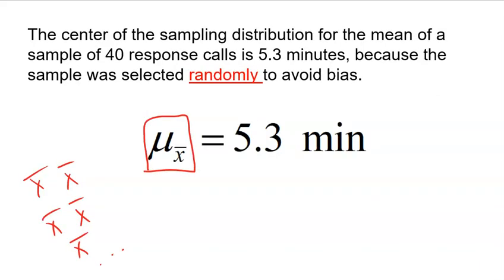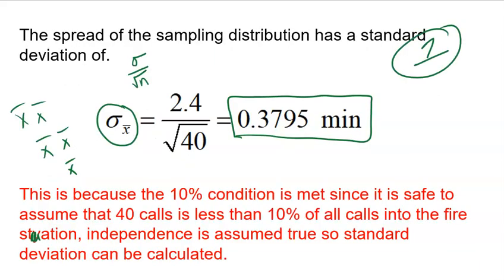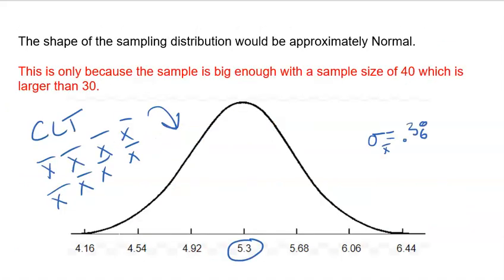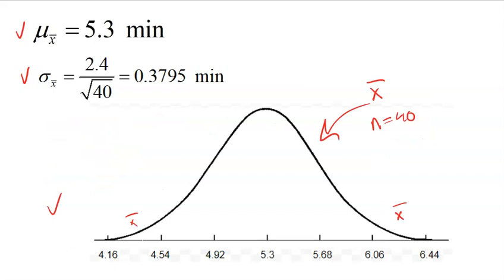Then you could find the middle of the sampling distribution. The spread is just following a formula. The shape is just checking that condition. And again, it all comes together. And once it's all laid out in front of you, you could find probabilities all day long. Hope you enjoyed this very simple video that talks about sampling distributions for means.